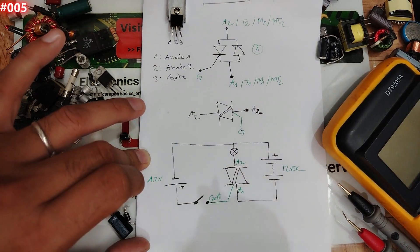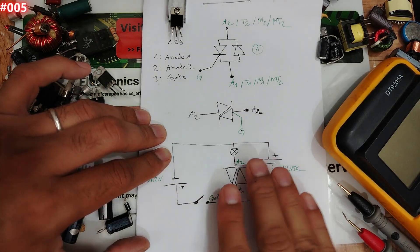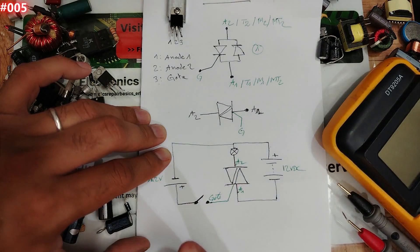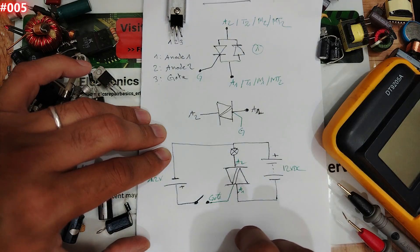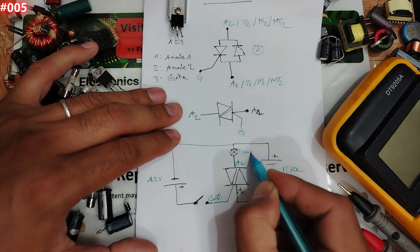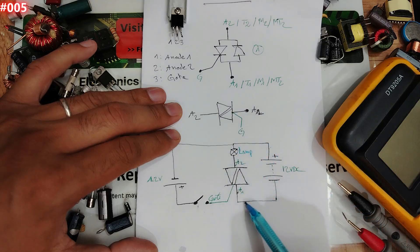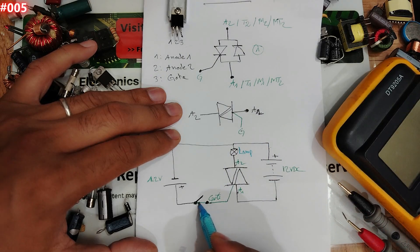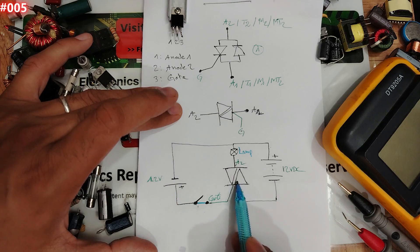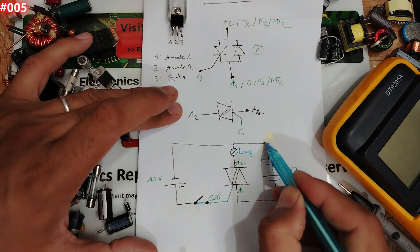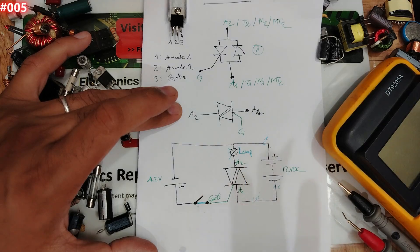When the switch is open, the lamp is off because no current flows. Once the switch is closed, 1.2 volts passes through the wire to the gate, the triac activates, current flows through the lamp, and the lamp lights up. This is exactly the same working principle as a transistor.